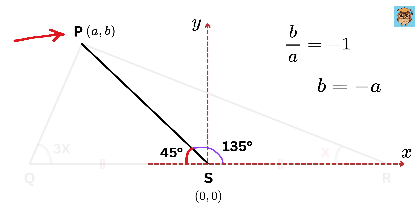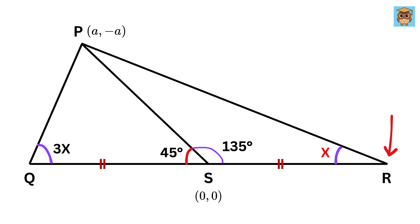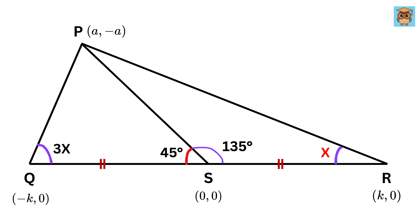So, point P can also be written as (A, minus A). Now let us label point R as (K, 0), where K is a positive number. What will be the coordinate of point Q? Simple — it will be (minus K, 0), because QS is equal to RS.